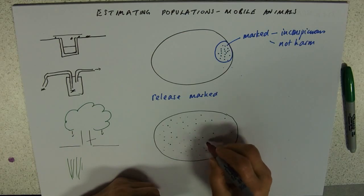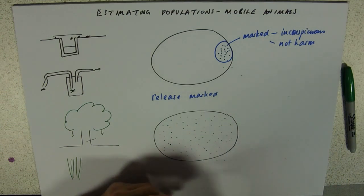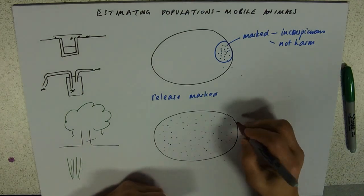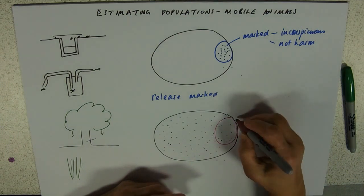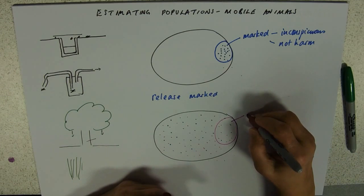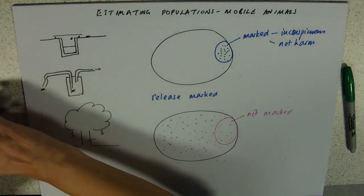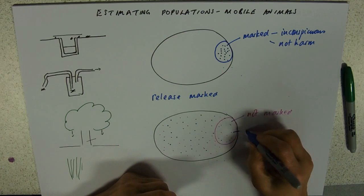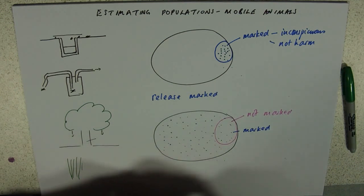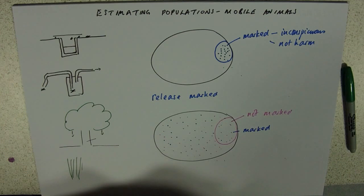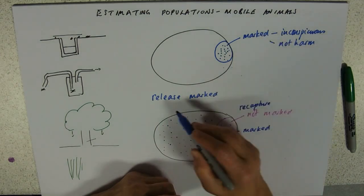The idea then is that when you release it, all those marked organisms and you've got your population, they mix back up right out into the general population. And then you recapture. So you do the same sampling thing and of course your recaptures will have in unmarked individuals and it will have in some marked individuals.